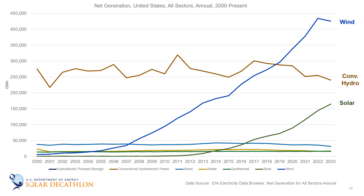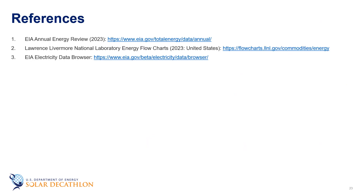Now let's look at wind and solar. The line for wind power generation has just recently eclipsed conventional hydropower after a dramatic increase over the past 10 years. Solar has also seen a similar rise, although less dramatic than wind. The improved economics of wind and solar has been one of the main catalysts for their rise in electricity output, and both are still expected to continue to increase. But it's important to note that it's still a long way to go before these renewables are generating as much electricity as natural gas, coal, or nuclear. That's all for this episode — please feel free to browse the resources to learn more, and thanks for watching.